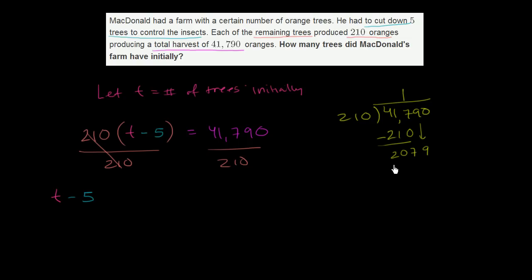How many times does 210 go into 2,079? It looks like it would go into it not quite 10 times. It looks like it would go into it nine times. Nine times 210 is going to be, let's see, nine times zero is zero. Nine times one is nine. Nine times two is 18. And then we subtract again.